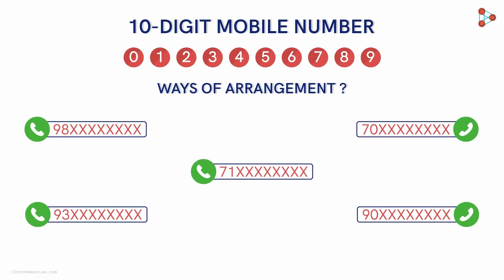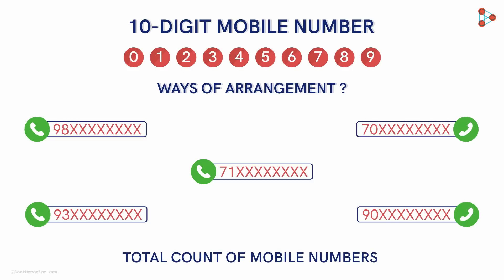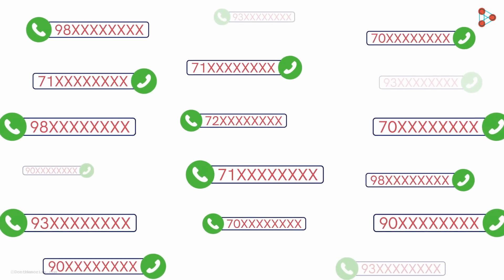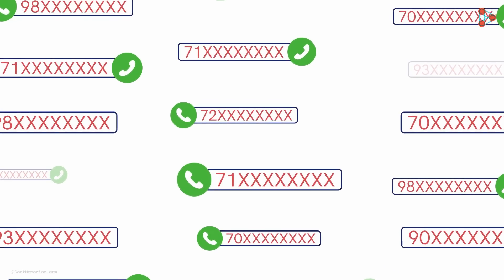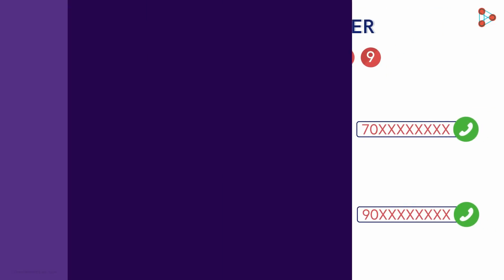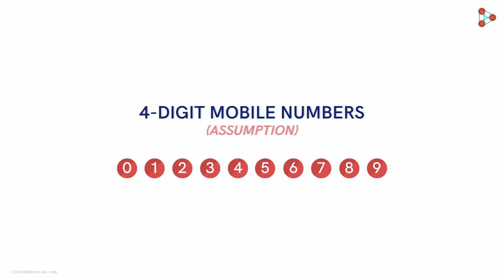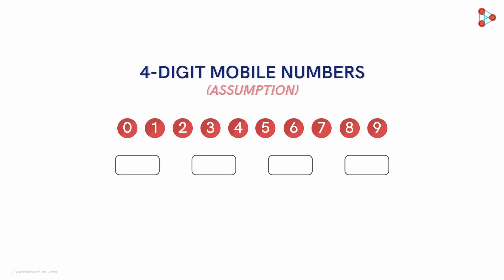We are only interested in the total count of the mobile numbers, not the actual arrangement of the digits. Can we do it manually? No — don't even think of doing that; you may end up losing a lot of your time and energy. Let's begin with the basics. Consider we only had 4 digits for our mobile number, which means we can select any 4 digits out of the 10 digits available. In how many different ways can we form 4-digit mobile numbers? Let's make 4 slots — these 4 slots together will form a single mobile number.